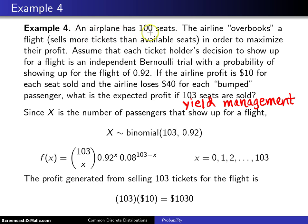An airplane has 100 seats. The airline overbooks a particular flight on this airplane, and by overbooking that means sells more tickets than available seats in order to maximize their profit. Assume that each ticket holder's decision to show up for a flight is an independent Bernoulli trial with a probability of showing up for the flight of 0.92.